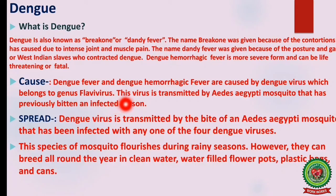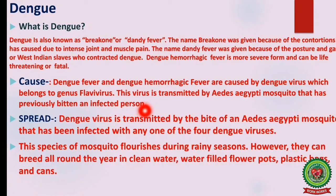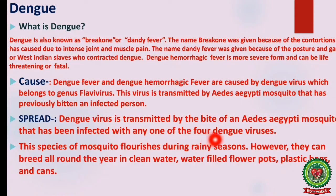Dengue fever and dengue hemorrhagic fever are caused by dengue virus, which belongs to the genus Flavivirus. This virus is transmitted by the Aedes aegypti mosquito that has previously bitten an infected person — which is why a person suffering from dengue is advised to cover their body so the mosquito cannot bite them and spread the virus to others. This mosquito flourishes during the rainy season but can breed all year round in clean water, water-filled flower pots, plastic bags, and cans.